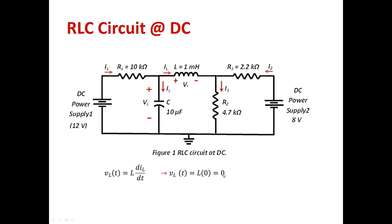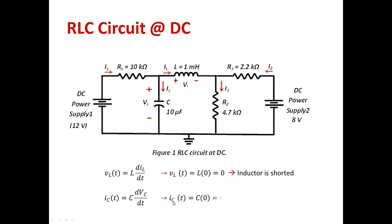So the voltage across the inductor becomes zero, and that is modeled as a short circuit. For the capacitor, the current through the capacitor is defined as C times dVc/dt. Since the voltage across the capacitor is constant and doesn't change with time in a pure DC circuit, dVc/dt equals zero. That means the current through the capacitor, IC(t), equals C times zero, which is zero — making the capacitor an open circuit.